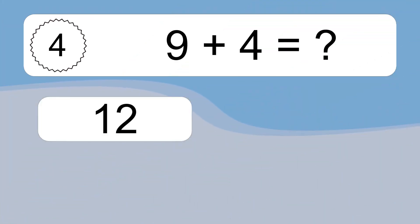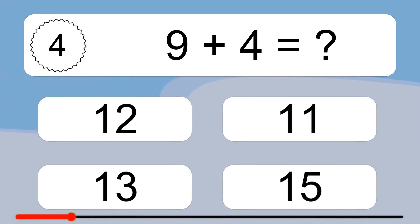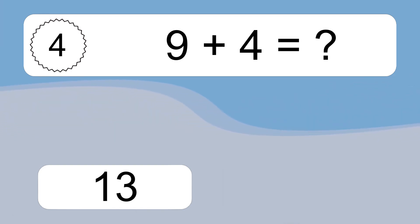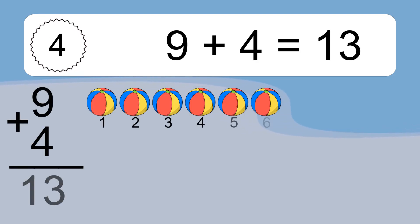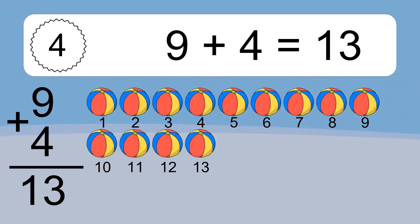9 plus 4 equals what? 9 plus 4 equals 13. Let's count it: 1, 2, 3, 4, 5, 6, 7, 8, 9, 10, 11, 12, 13.